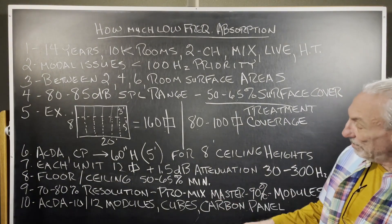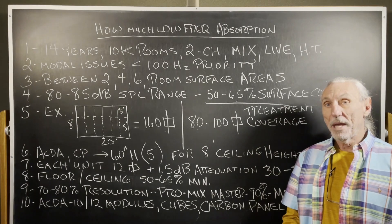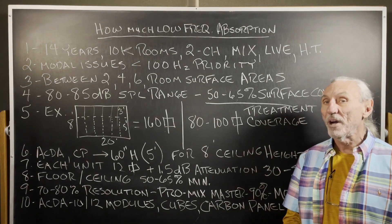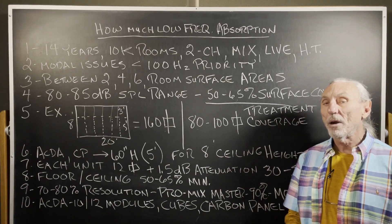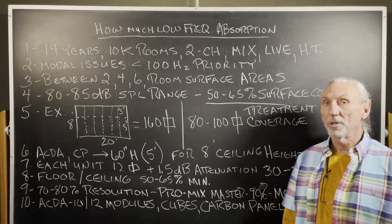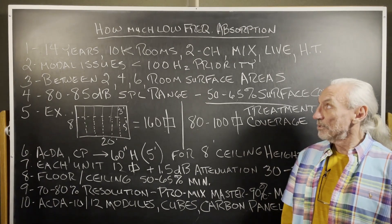So ACDA 12 modules, the carbon panel. The CPA is our foam technology. It goes to 65. It's not a powerful unit, but it will manage that floor to ceiling issue for you because it's not quite as strong as the other issues are in the room.